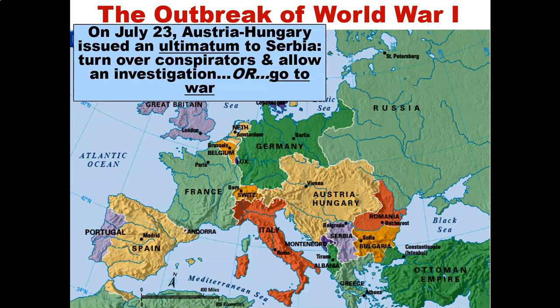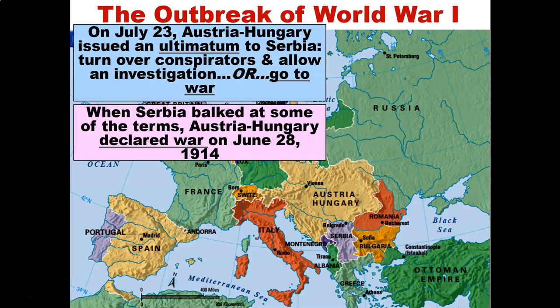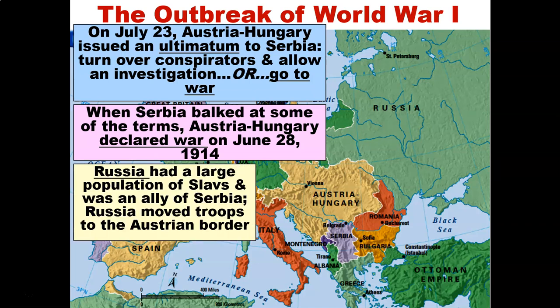On July 23rd, Austria-Hungary issued an ultimatum to Serbia: turn over the assassins and allow for an investigation, or go to war. When Serbia balked at some of the terms, Austria-Hungary declared war on June 28th, 1914.